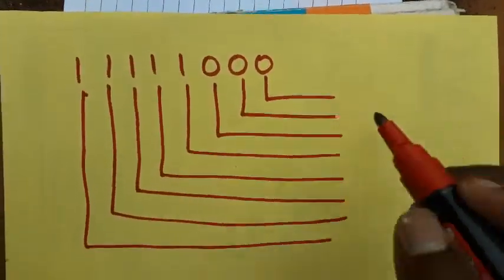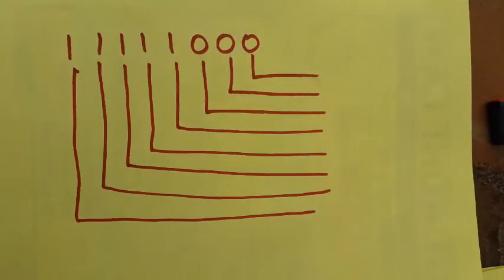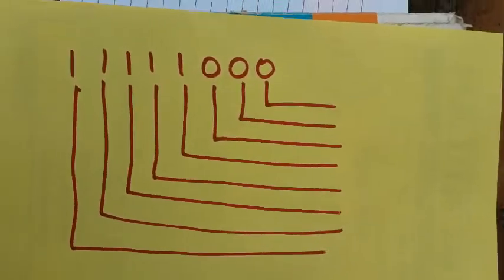Hello friends, today we are going to learn how to convert from binary number to decimal number. Binary number is the one-zero-one-zero combination, and decimal number will be one, two, three, four.